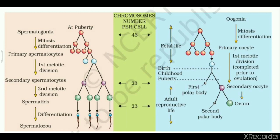Look to the middle line — the middle line describes the chromosome numbers per cell. On the left hand side, in the pink colour background diagram, the information is given for the male.